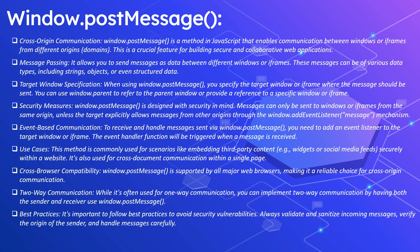You can implement two-way communication by enabling both the sender and receiver using window.postMessage and event listeners. Ensure best practices are followed to avoid security vulnerabilities — always validate and sanitize incoming messages.